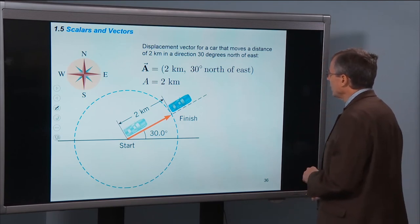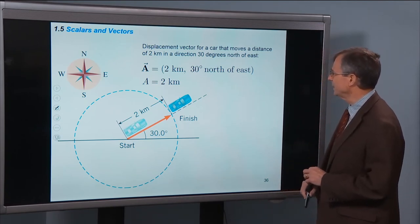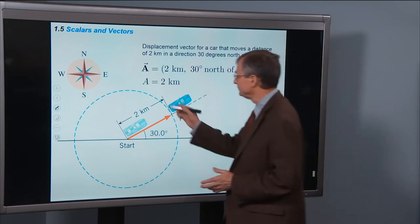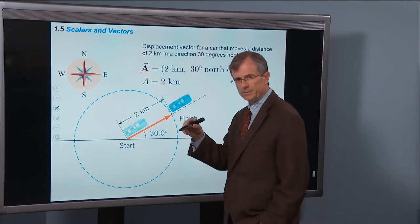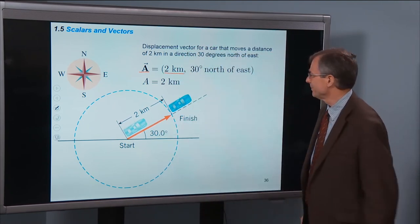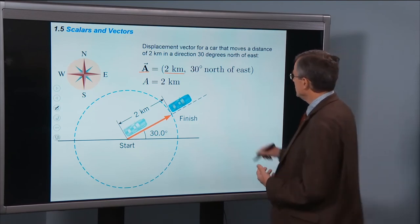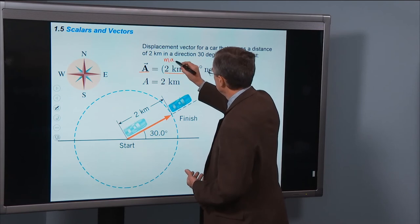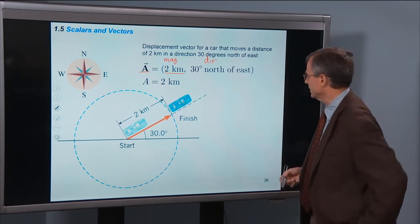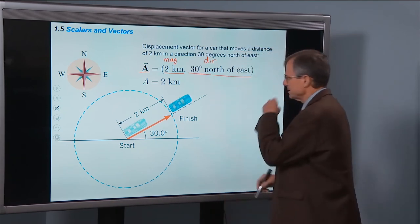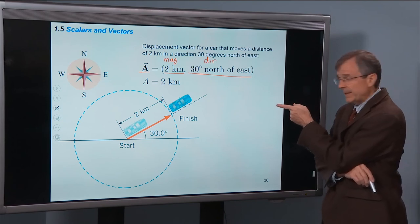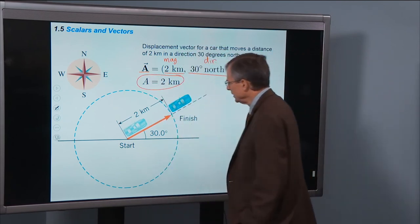Alright, displacement vector for a car that moves a distance of 2 kilometers in a direction 30 degrees north of east. Here's my vector. It's a displacement vector, like we talked about. Here's the magnitude. That's the distance traveled, 2 kilometers. And the direction is 30 degrees north of east. So this is the magnitude. And this is the direction. And you need both bits of information to fully specify the vector. So here's 30 degrees north of east as the direction. Then the magnitude of the vector we can write as 2 kilometers.